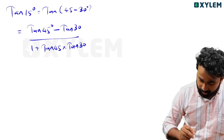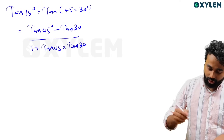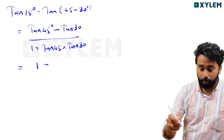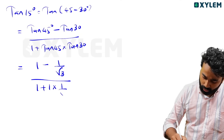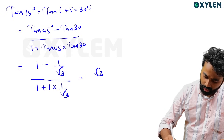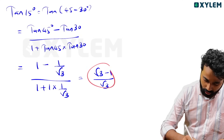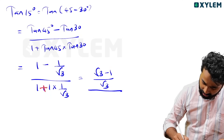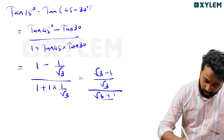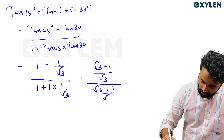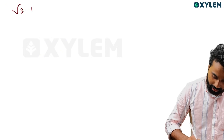That's the method. So the answer uses tan 45 equals 1, and tan 30 equals 1 by root 3. This gives us root 3 minus 1 divided by root 3 in the numerator. In the denominator: 1 plus 1 into 1 by root 3, which gives root 3 plus 1 by root 3. So the final answer is root 3 minus 1 by root 3 plus 1.